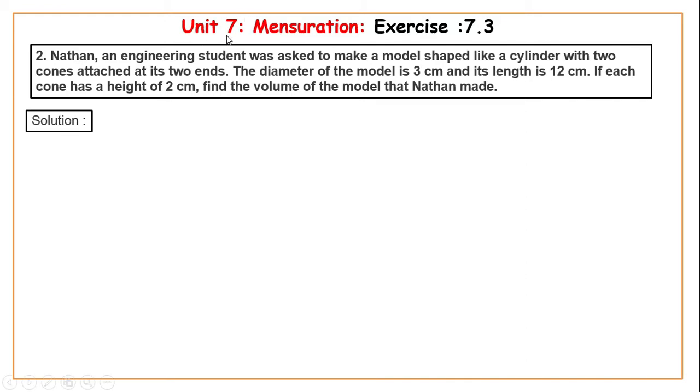Assalamu alaikum students. Unit 7 mensuration exercise 7.3 question number 2. Nathan, an engineering student, was asked to make a model shaped like a cylinder with two cones attached at its two ends. The diameter of the model is 3 centimeters and its length is 12 centimeters. If each cone has a height of 2 centimeters, find the volume of the model that Nathan made.